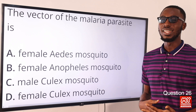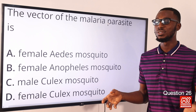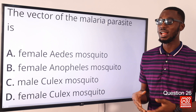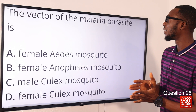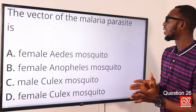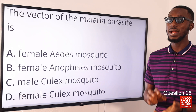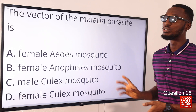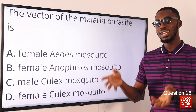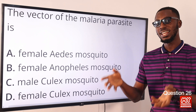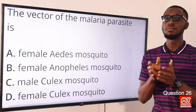Question 26: The vector of the malaria parasite. Vectors are animals that transmit disease-causing organisms, such as rodents and insects like mosquitoes. Malaria is caused by Plasmodium malaria or Plasmodium falciparum. The carrier or vector is an infected female Anopheles mosquito. We have three main groups of mosquitoes: Anopheles, Culex, and Aedes. The correct option is option B for female Anopheles mosquito.